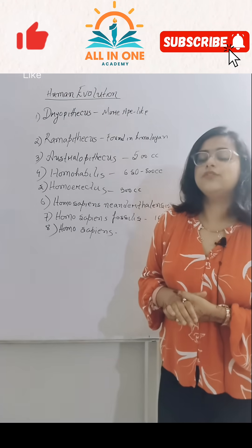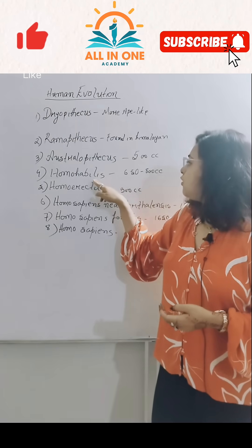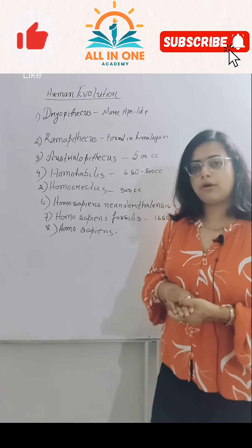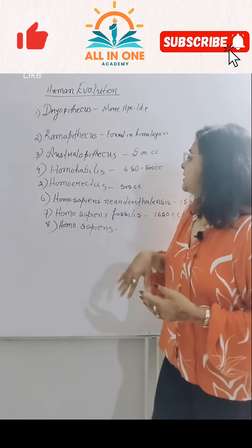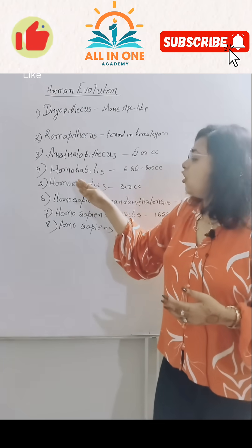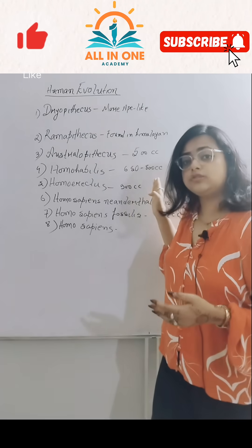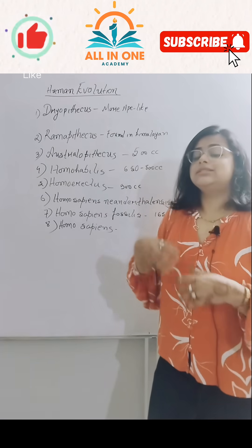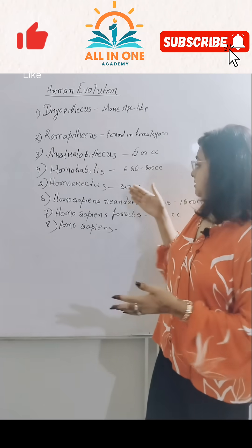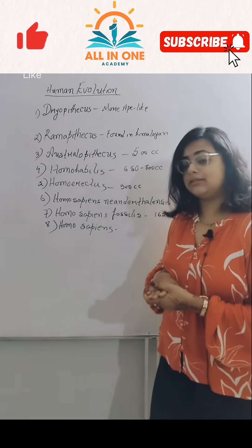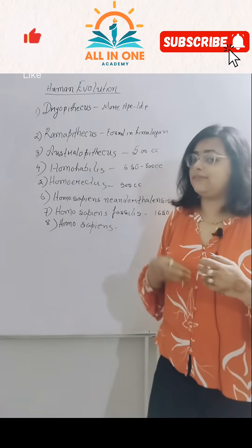Third is Australopithecus, having a brain power of 500 cc. Fourth is Homo habilis, having a brain power of 650 to 800 cc. Then comes Homo erectus.